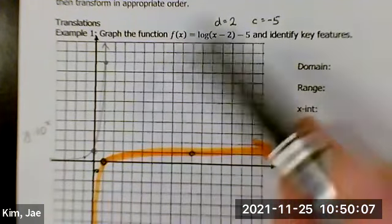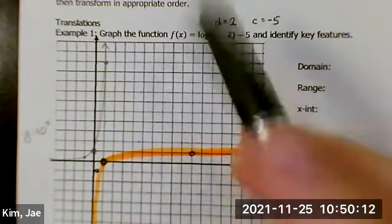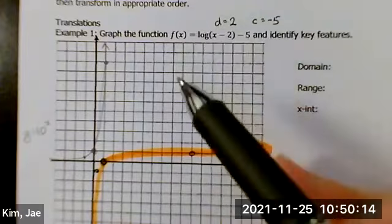If you are shifting to the right, does that asymptote move? Yes. If I'm shifting up or down, does that asymptote move? No. So you only have to worry about the d value.